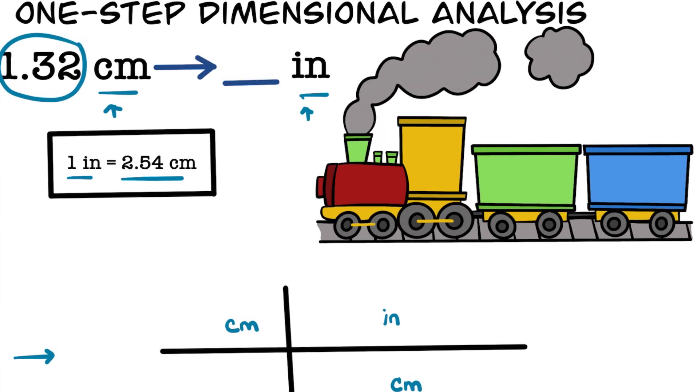Once we arrive at the final unit we want to get to at the top, we can stop and we don't need any more conversion facts. In our case, since the final unit we want to get to is inches, we can stop right here. When we cancel out the units, we arrive at the units we want to get to, which is inches.